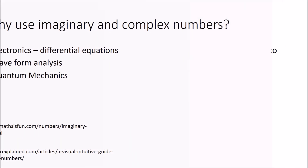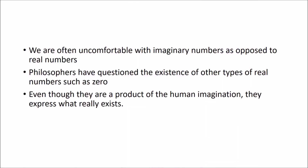Here are some concluding remarks. In mathematics, when we introduce a new number from the number system — starting with natural numbers like 1, 2, 3, 4, 5 — the minute we start adding new things, we become more uncomfortable. Especially at higher levels when we start doing irrational numbers and then imaginary numbers, that's when we get a little bit uncomfortable, and that's normal. Philosophers question the existence of other types of numbers, like zero. One thing we could say is that yes, the numbers are the product of human imagination — it's a language we've created to express what is there, expressing the things that really exist.